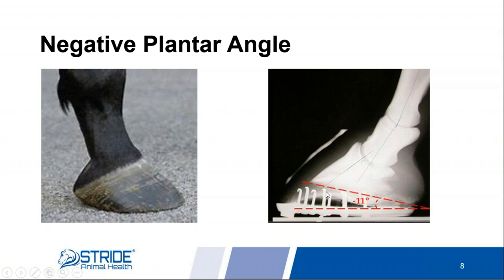When we look at this radiograph, notice the horseshoe nails don't even reach the bottom of the coffin bone — we've got lots of sole depth, in fact too much. It appears that in this case somebody's taking off way too much heel and leaving way too much toe. We could trim through here and still have plenty of sole depth, but look what that would do to the angle — it would bring that toe down and really improve that planter angle. Sometimes a little corrective trimming can do an awful lot.